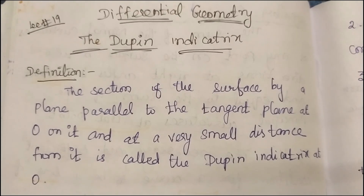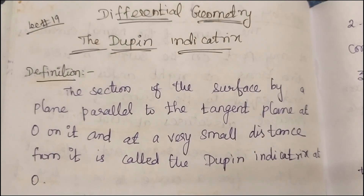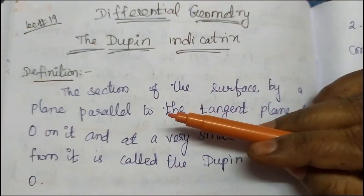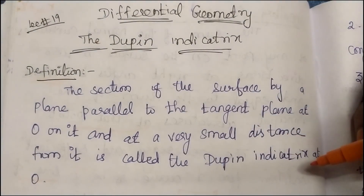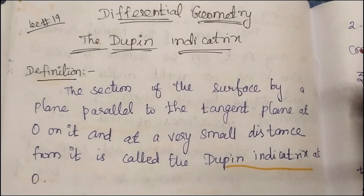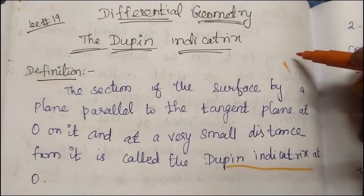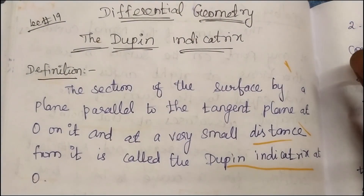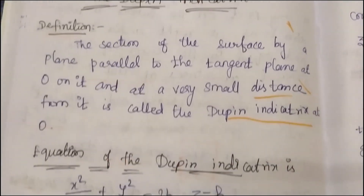Dupin Indicatrix, Conjugate Directions, Asymptotic Lines — what is the current results equation? What is the definition? The restriction of a surface by a plane parallel to the tangent plane O on it and at a very small distance from it is called the Dupin Indicatrix at O. So, section of surface by a plane parallel to the tangent plane at O, at a very small distance from it. This is the Dupin Indicatrix — this is the definition.